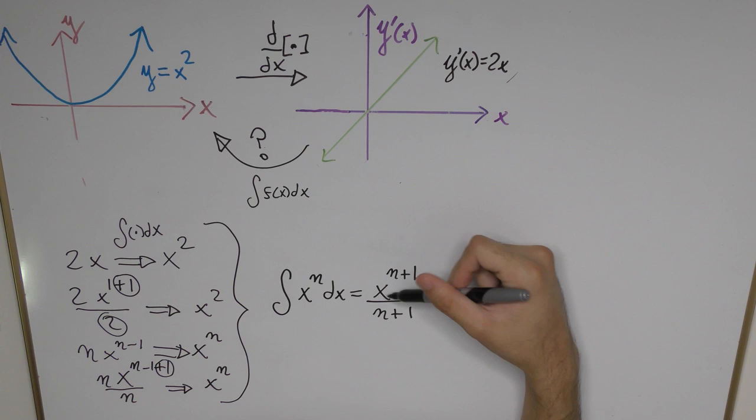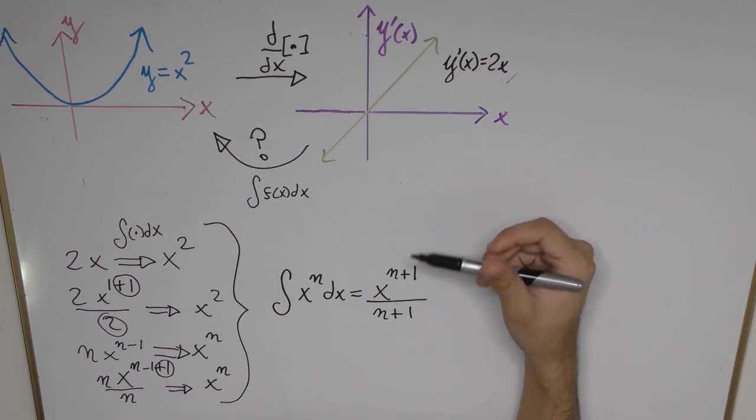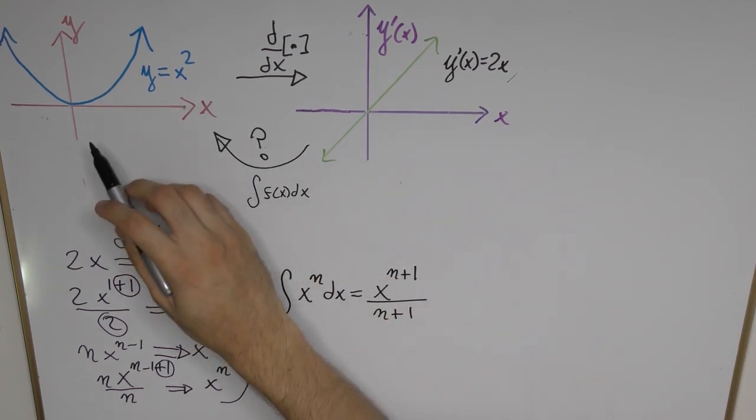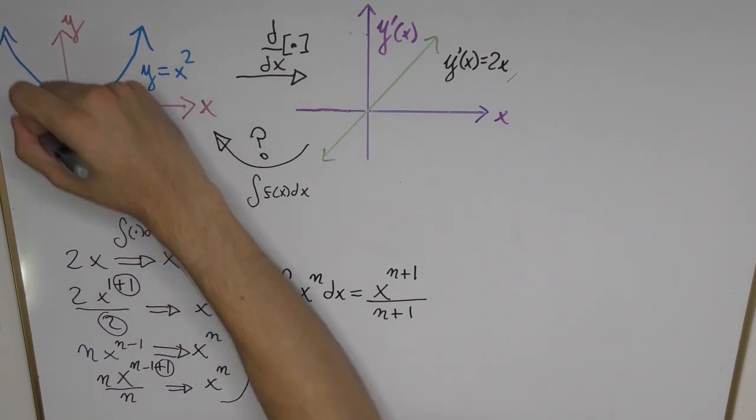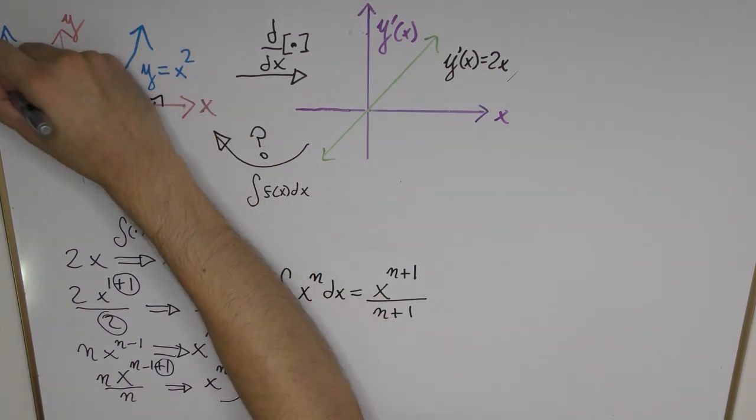Now one peculiar thing about this result is that it doesn't really tell you anything about the position of the function along the y-axis. So if we go all the way back to a plot here of y equals x squared, we know that if we were to plot a similar function, so let's say we take something like y equals x squared minus one, so that now the function crosses the y-axis at the point minus one.